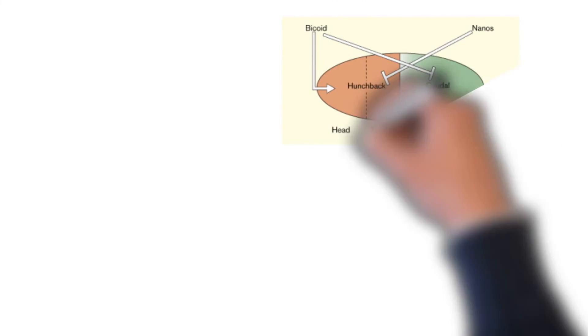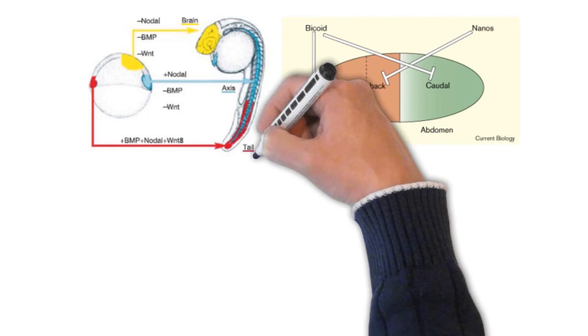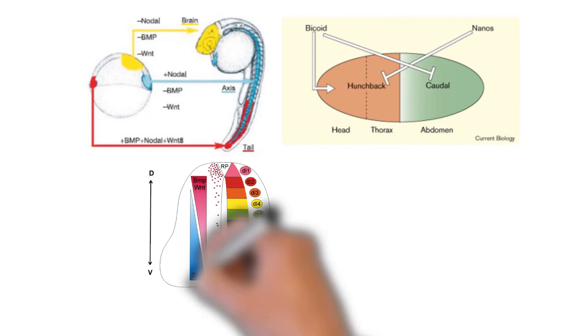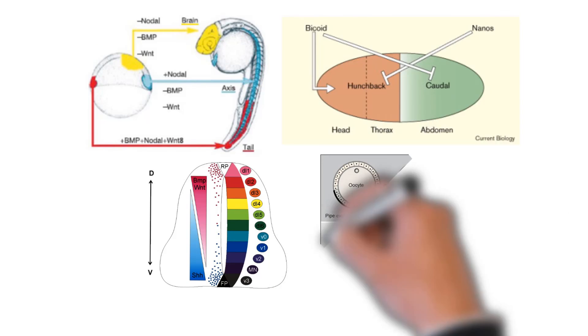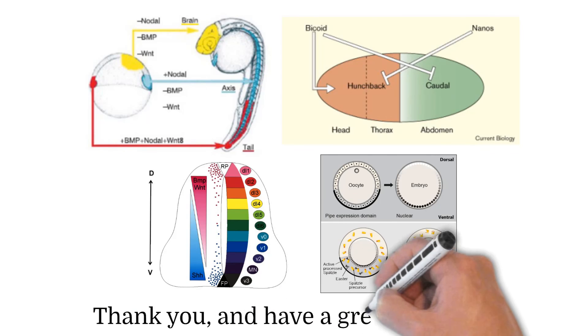Today, class, we have learned multiple examples of how gradients are used in the formation of the dorsal ventral axis and anterior posterior axis and the position of key components along them. Gradients are some of the most useful concepts that aid in the development of embryos, so I hope that you appreciate this wonderful piece of nature. Thank you so much, and have a great summer.